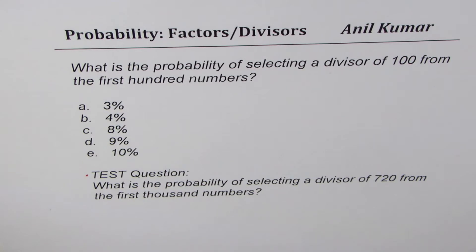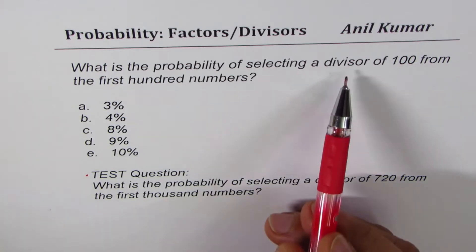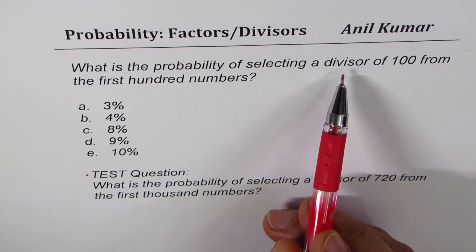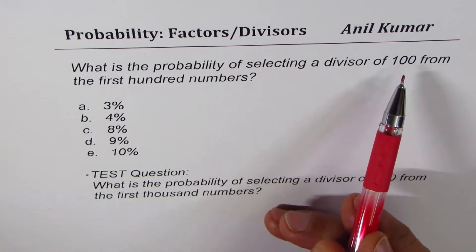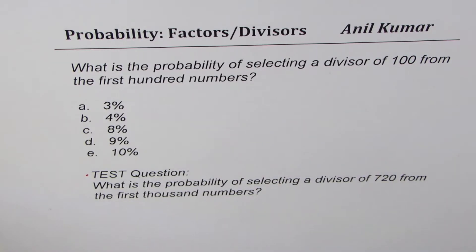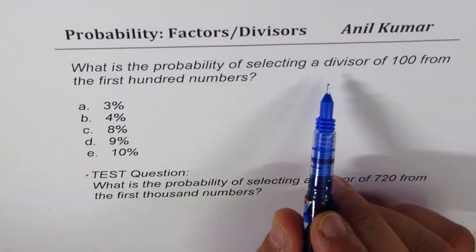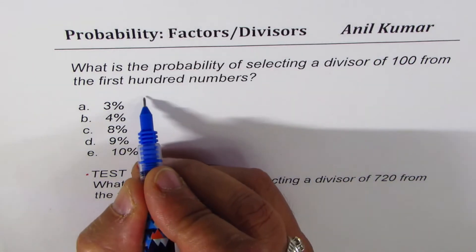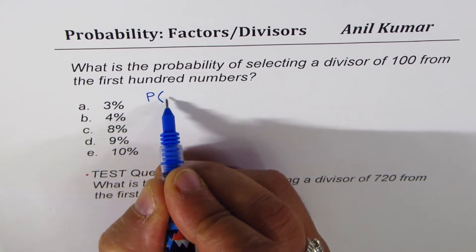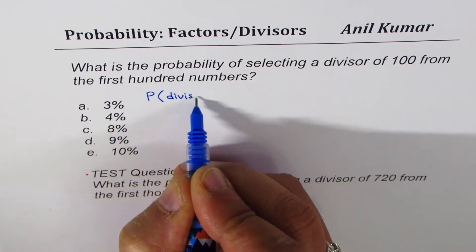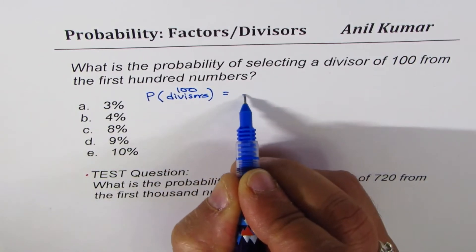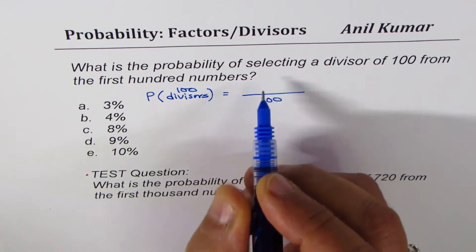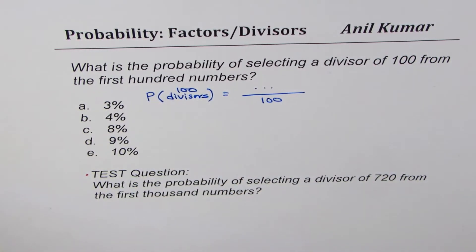Let's talk about part one, which I'll solve for you. What is a divisor? Divisors of 100 are numbers like 1, 2, 10 — they divide into 100 without any remainder. When we want to find probability, we need to do two things. The total numbers are 100, so the denominator is 100. Now we want to know how many divisors there are.